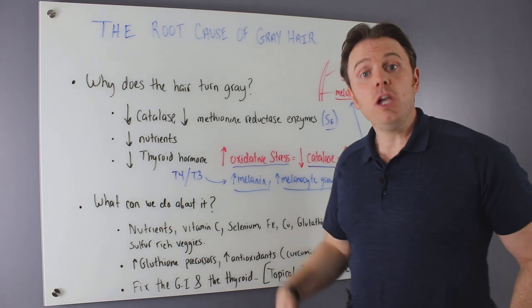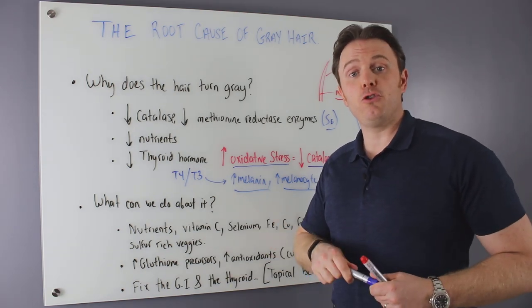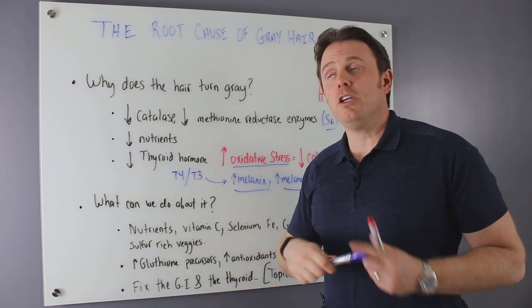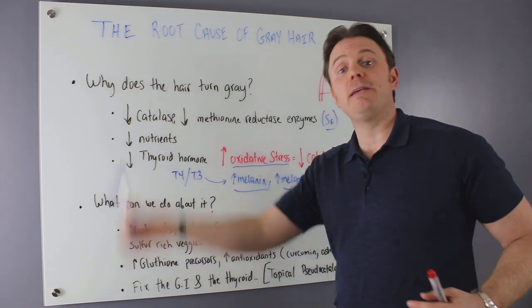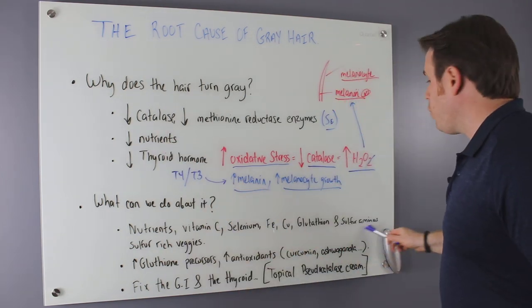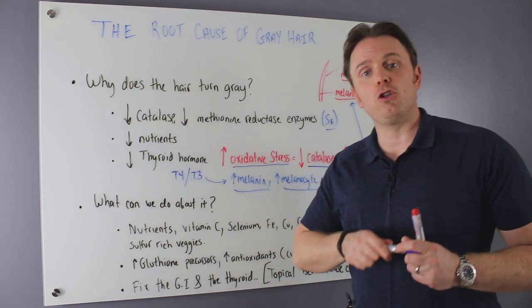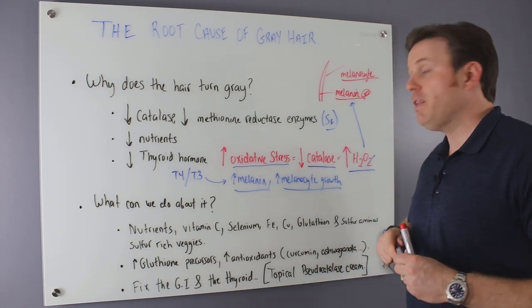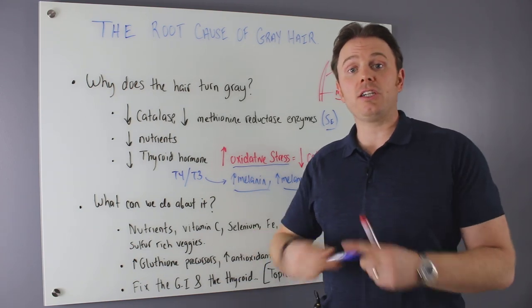We can take it liposomally. We can also give a lot of the precursor nutrients like cysteine, glutamine, and glycine to help increase it. Sulfur-rich veggies. These are all very, very important things we can do. We can also increase antioxidants as well.